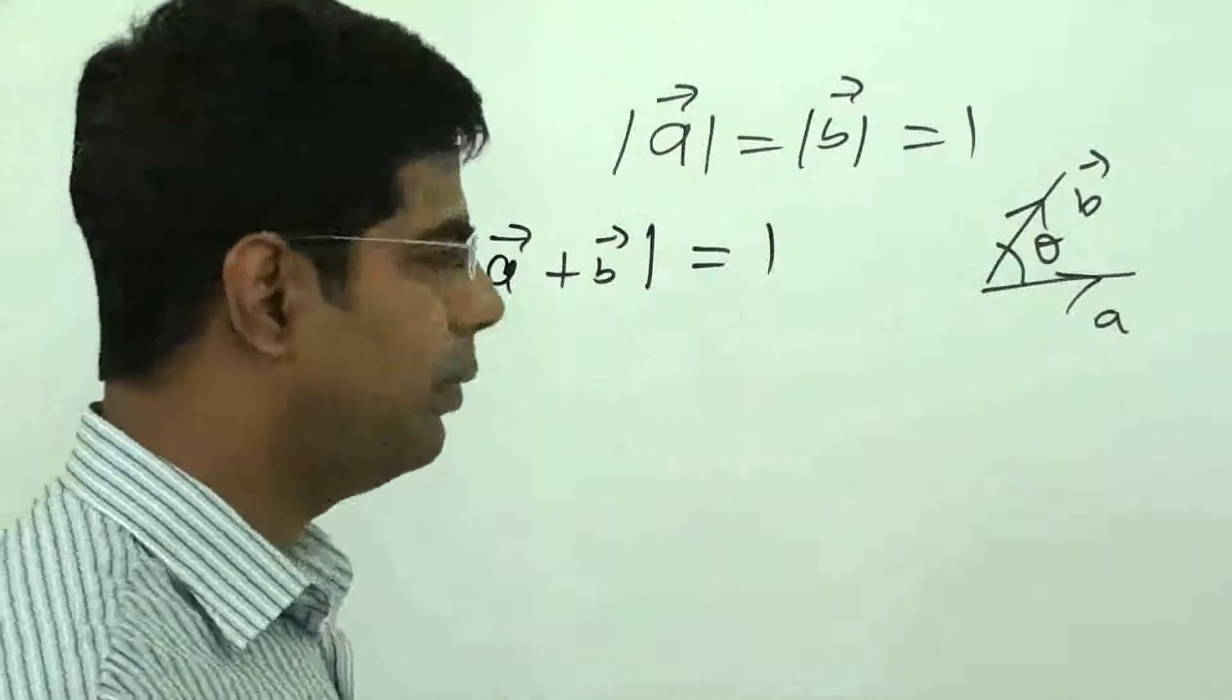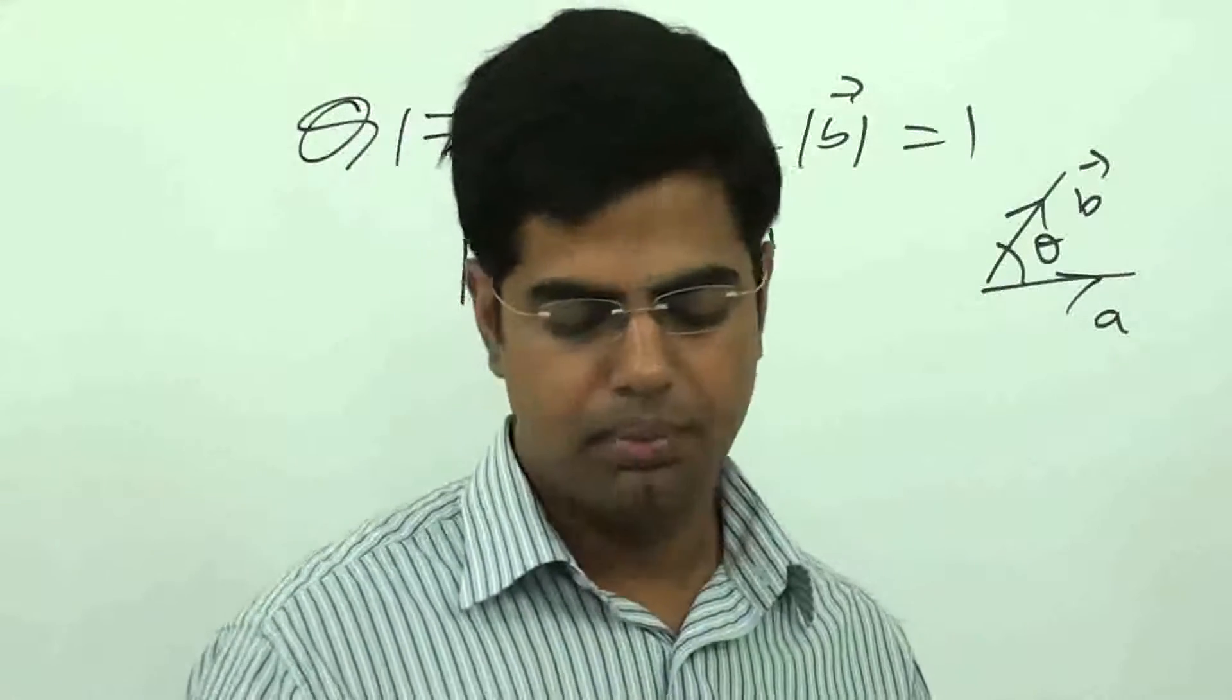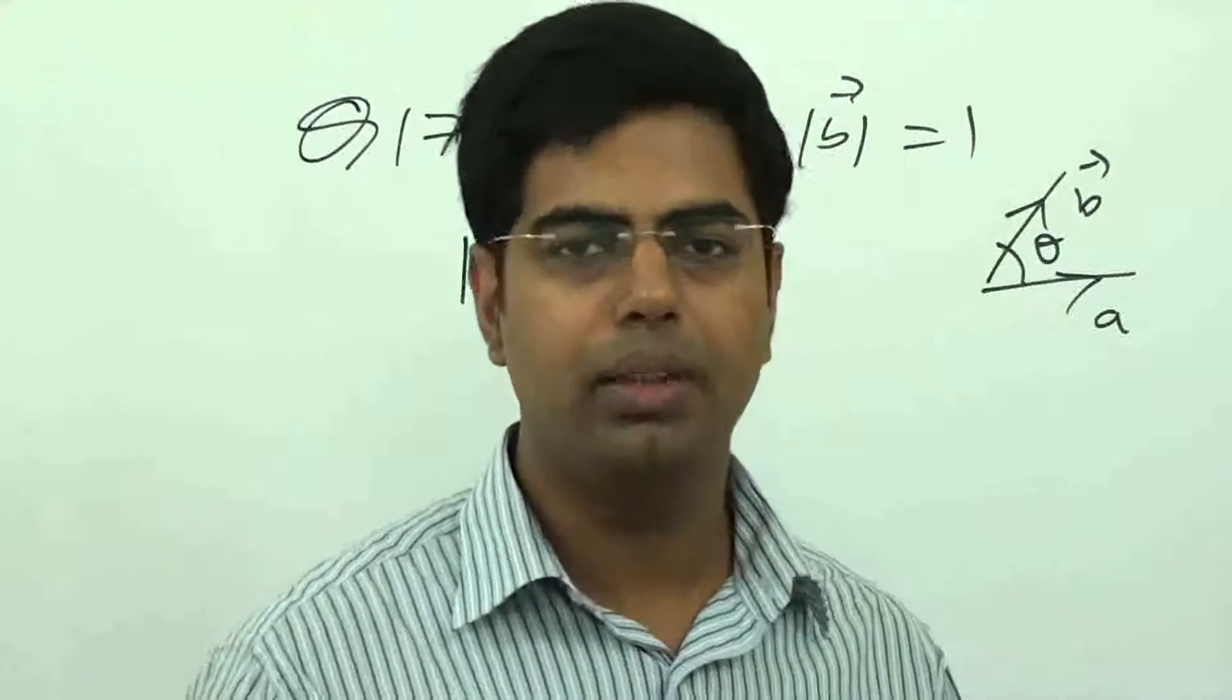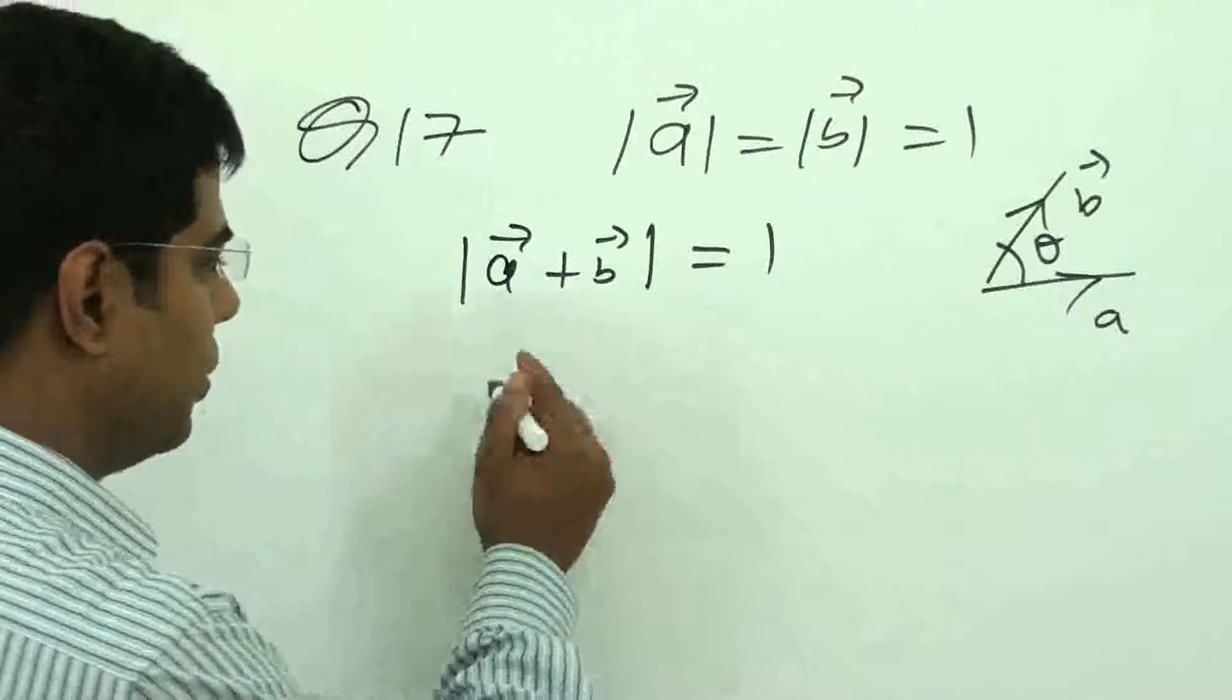The angle between A and B, the options are: pi by 4, pi by 3, pi by 2, 2 pi by 3. So we can use this result.